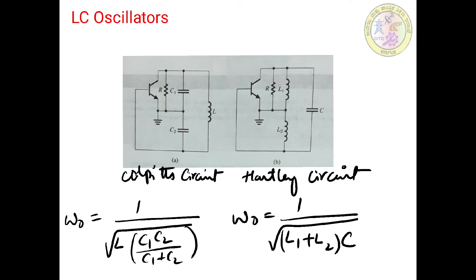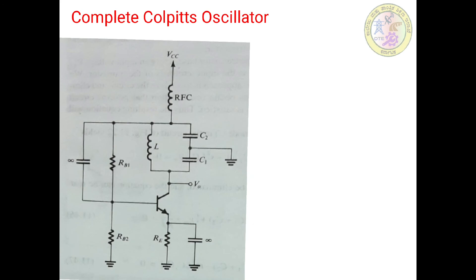The ratios L1/L2 or C1/C2 determine the feedback factors. A practical LC circuit — the Colpitts oscillator — is taken as an example as shown in the figure. This is a complete Colpitts oscillator because it includes all the biasing arrangements.